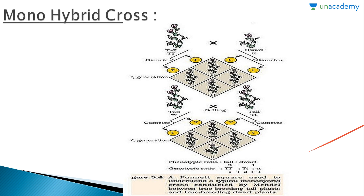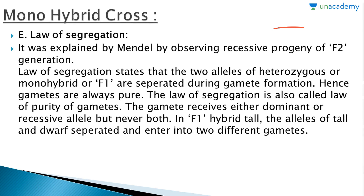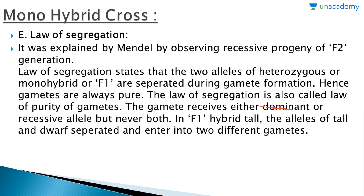The phenotypic ratio shows only the outward characters, while the genotypic ratio shows the genetic nature. The law of segregation, explained by observing recessive progeny of F2 generation, states that the two alleles of a heterozygous or monohybrid F1 are separated during gamete formation, so gametes are always pure. This law is also called the law of purity of gametes. A gamete receives either the dominant or the recessive allele, but never both. In the F1 hybrid tall plant, the alleles for tall and dwarf separated and entered into two different gametes.